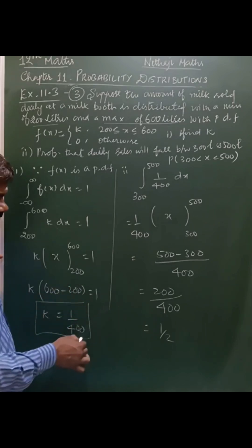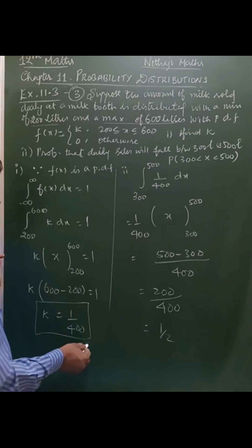400 into k equals 1, so we have to find the value of k. First one, the value of k is 1 over 400.